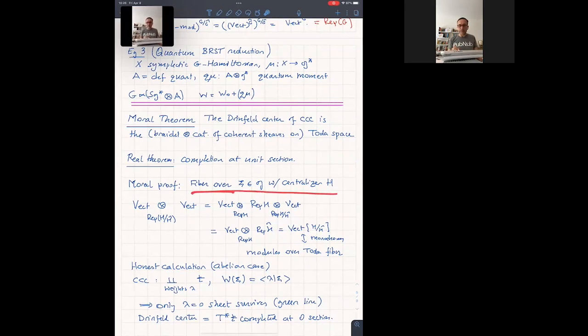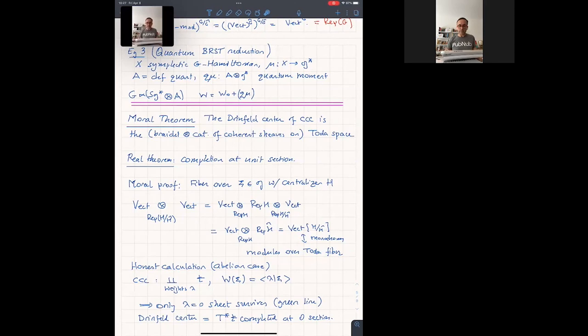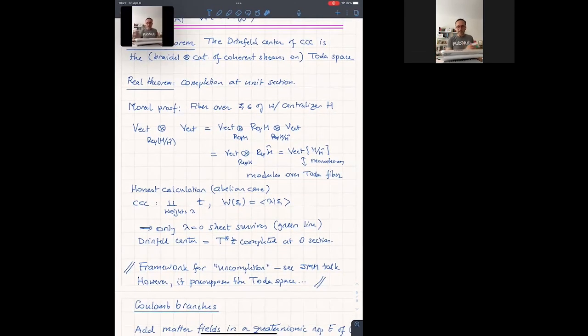It's a moral theorem because it's not actually true, at least in any set of consistent definition that you want. There's a reason for that. The real theorem is that you get the completion of the unit section. So it already says something slightly non-trivial around zero in the non-abelian case. But here's the moral proof. Well, let's compute the fiber over a point in the green section. Let's see what we're generating in the fiber when we're computing the center. And this is what we're computing. Let's not justify that.